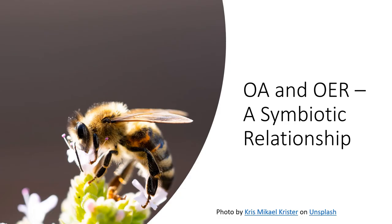Like a bee depends on a flower to make its food, and the flowering tree depends on the bee to help it reproduce, open access and open educational resources rely on each other in a symbiotic relationship. The ethos behind both concepts are the same: information should be shared freely and widely. Open access creators need faculty to be willing to distribute their materials, and faculty, who are often open access creators themselves, need more creators to share their findings and work with open licenses to allow them to be used for open educational resources.